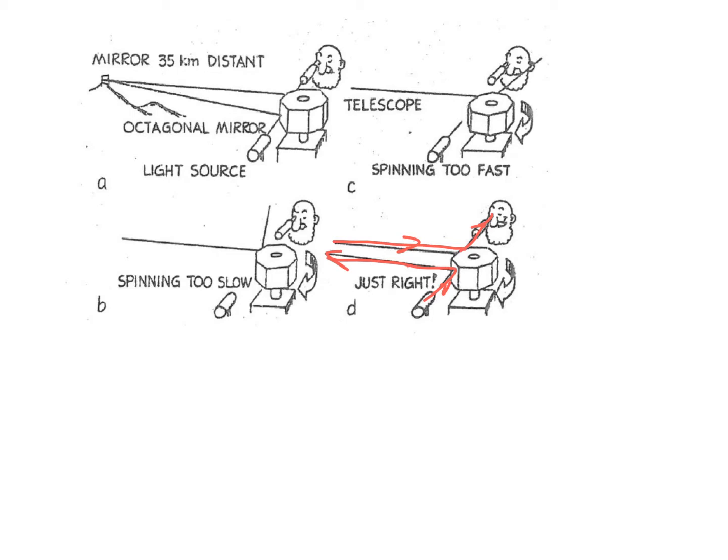The bottom line is the math is simply V equals D over T. We're looking for how fast this mirror needs to spin. We're going to assume that we know the speed of light. The speed of light is 3.00 times 10 to the eighth meters per second.